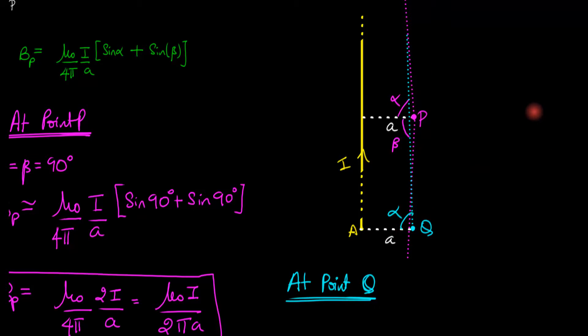Now what is angle beta? We'll draw a line from that point Q to the other edge. What's that angle? That angle is 0. Can you see that? I can't even draw it. That angle is 0.